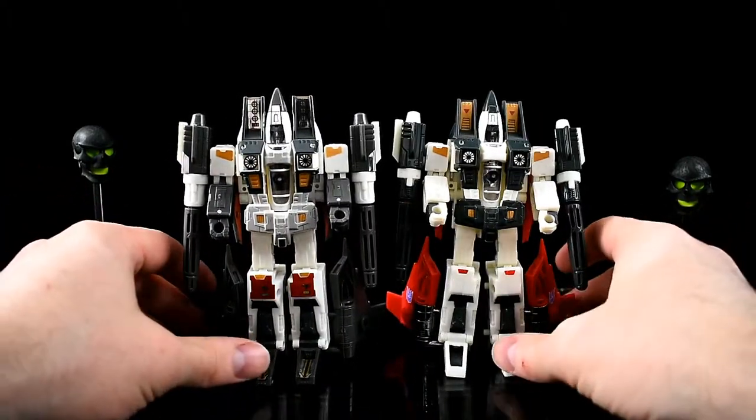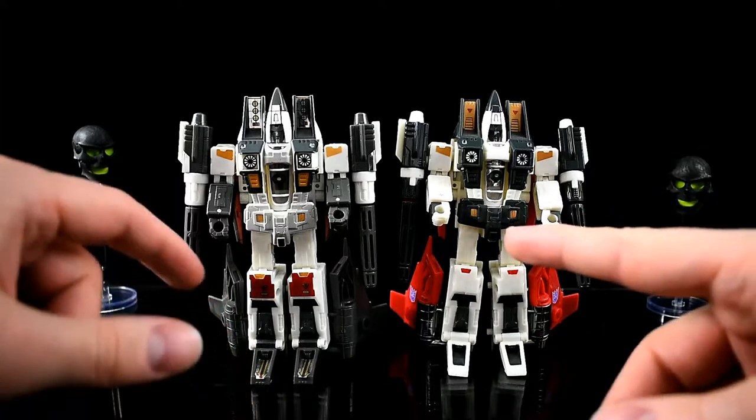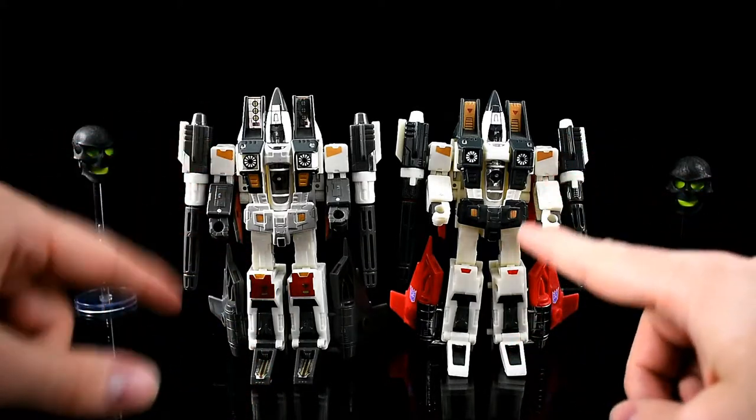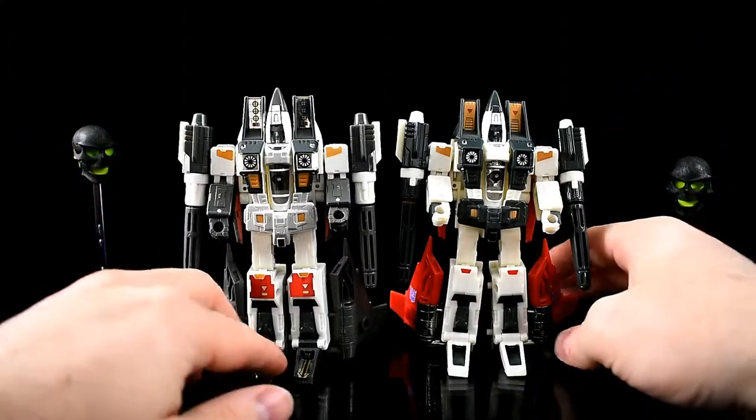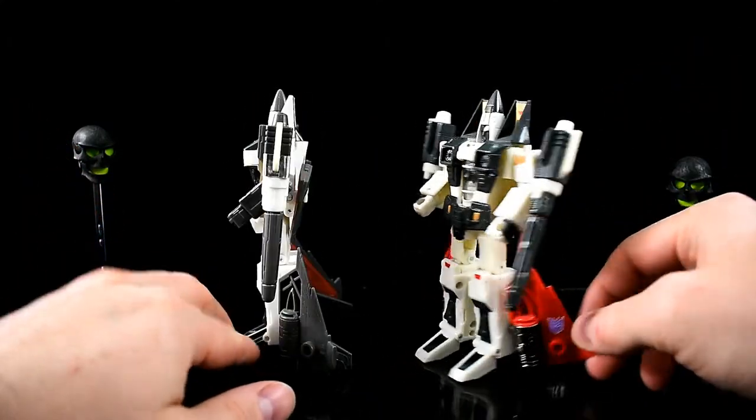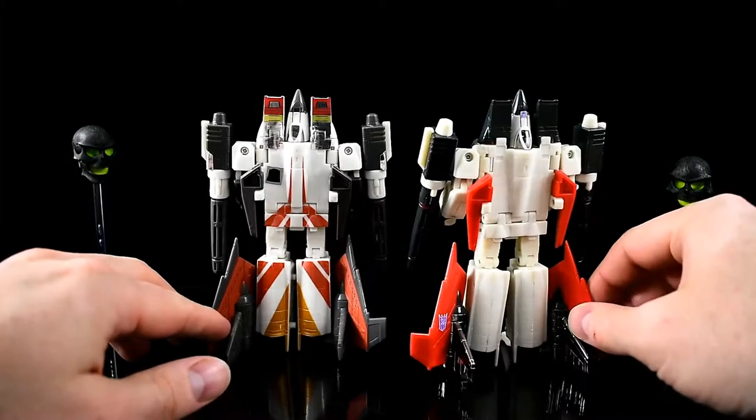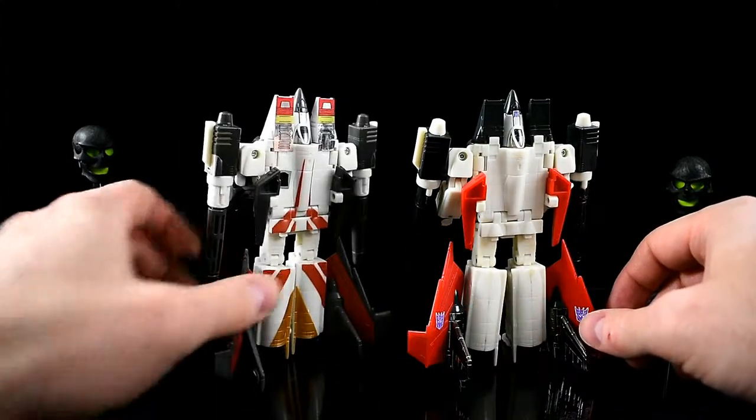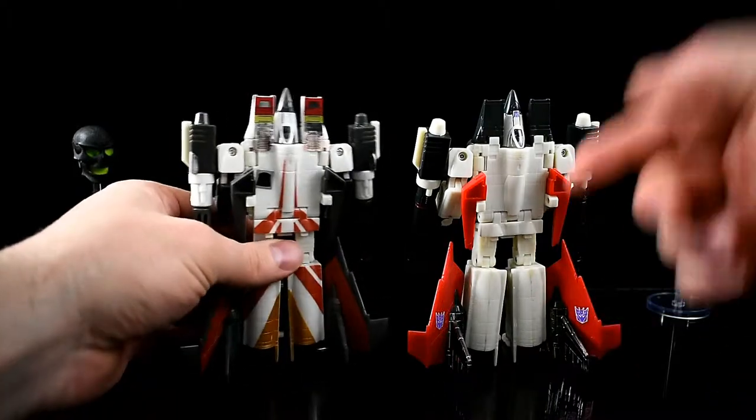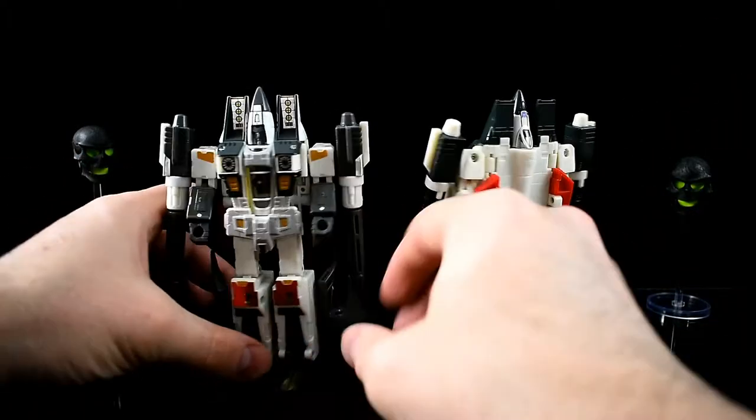So here's Ramjet. He's an off-white or cream colored bot with dark gray, various minor differences in the paints, and he's got red wings. Except on the US version it's only red on the back. It's got a strange little design painted in there, whereas the Japanese version looks a lot more like the G1 figure.